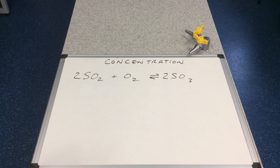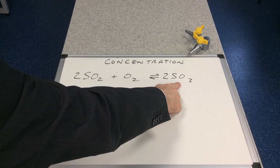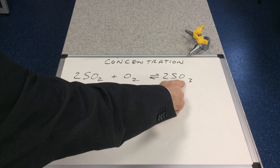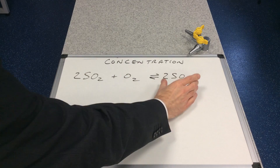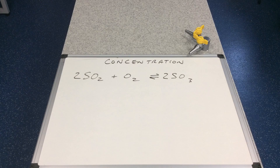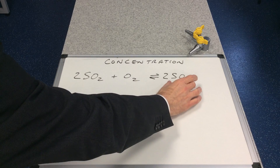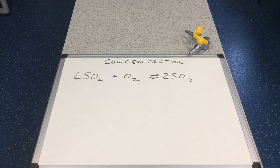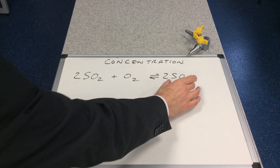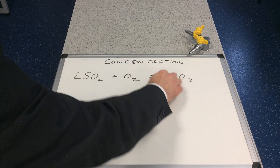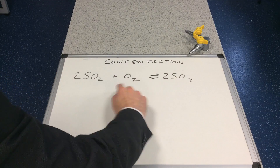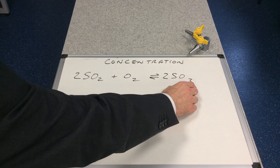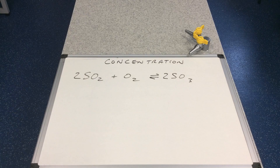Now suppose we increase the concentration of SO₃ — some extra SO₃ is added to the system. That's going to increase the concentration on the right hand side, so the reverse reaction will take precedence. The reverse reaction is the decomposition of SO₃. The equilibrium wants to bring that concentration back down, so the SO₃ splits up and the equilibrium position moves to the left.